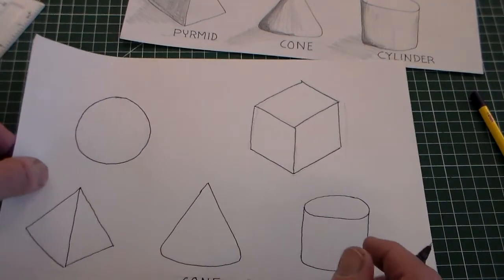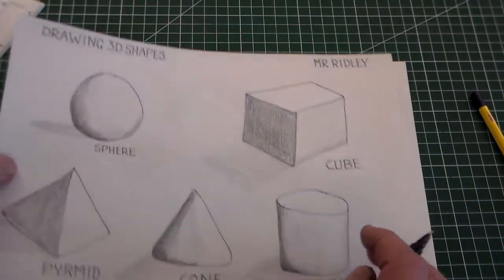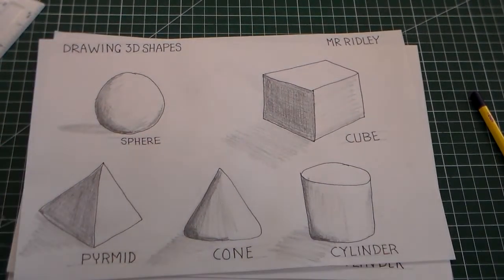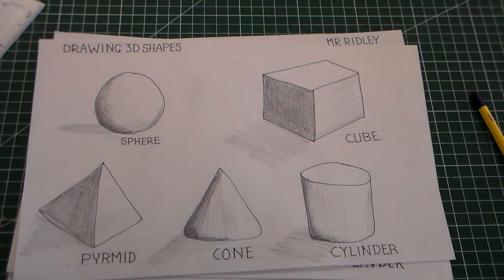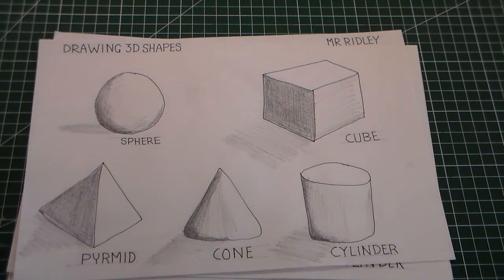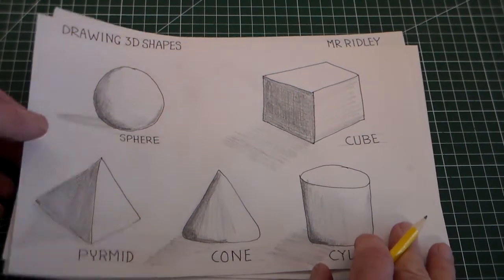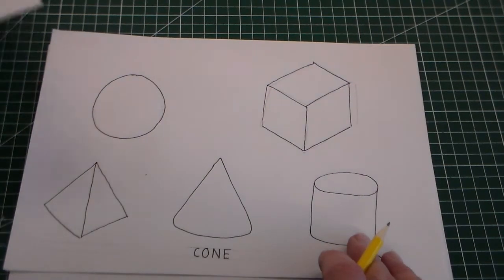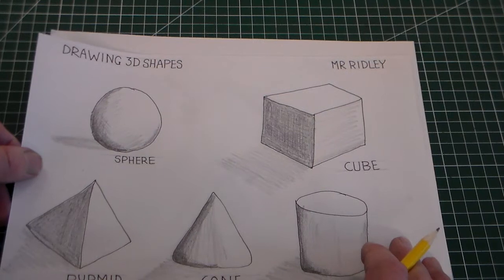So I've labeled two of the shapes. Obviously there's the labeling for the rest of the shapes. Now what we need to do is we need to start shading. So we're going to try and shade the shapes to go from what are basically flat 2D shapes to 3D shapes.